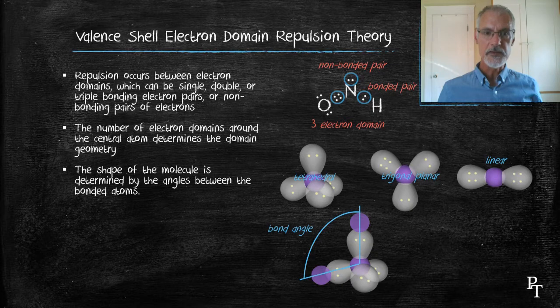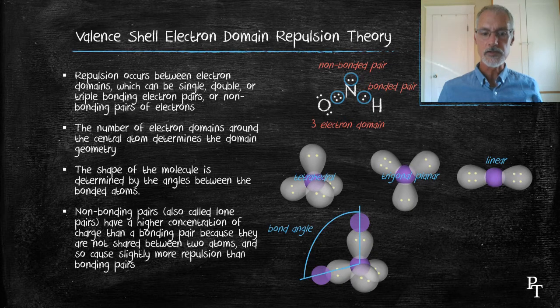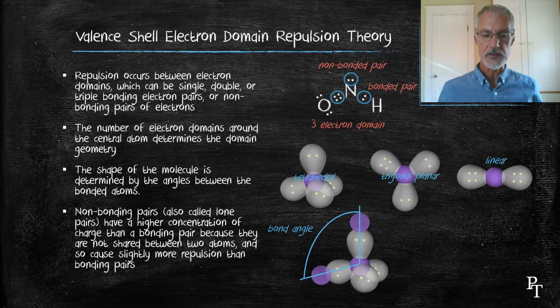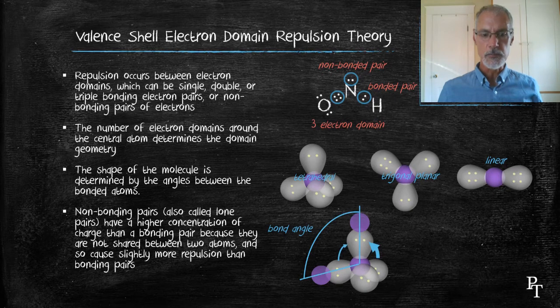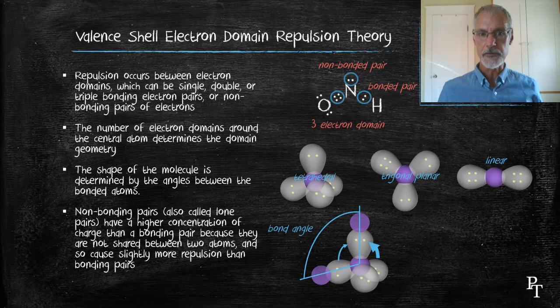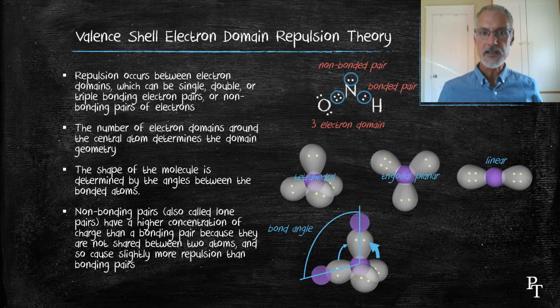Non-bonded pairs of electrons will tend to have greater repulsion than bonded pairs of electrons. So here you can see in the diagram, the push from the unbonded electrons, those that aren't connected, is going to be slightly greater than that between a bonded pair.